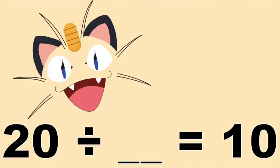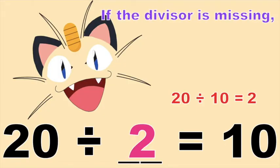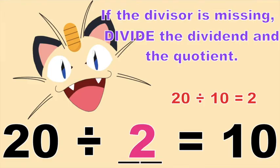How about if we have this one: 20 divided by blank is equal to 10. What will be the divisor? Very good! That is 2. So to check if our answer is correct, we simply divide 20 and 10. 20 divided by 10, that is 2. So if the divisor is missing, divide the dividend and the quotient.